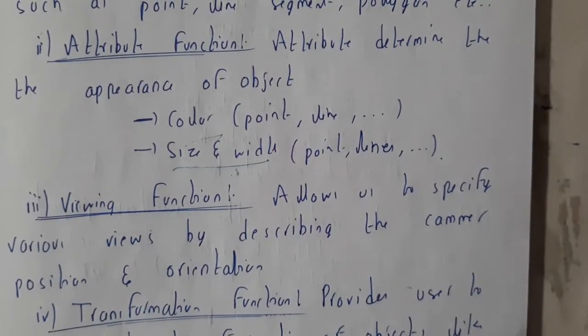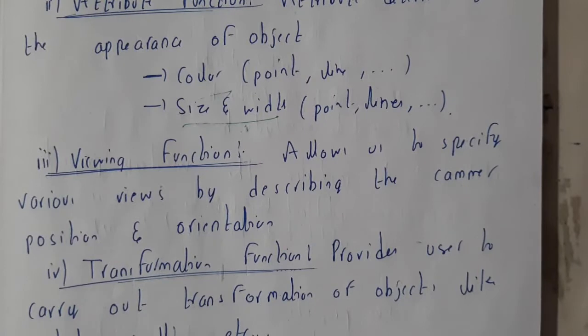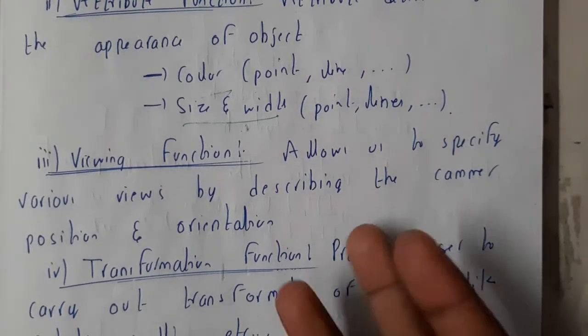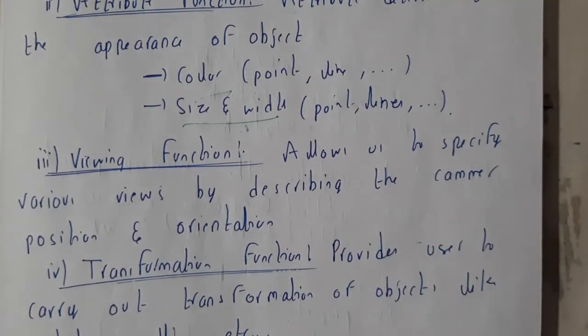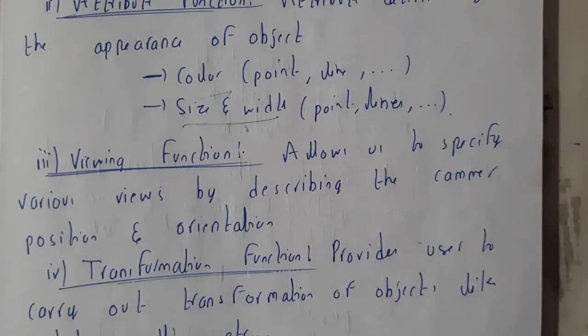Viewing functions specify in which view the camera should view - like perspective or orthogonal or any kind of angular views. Angular views come under oblique views.